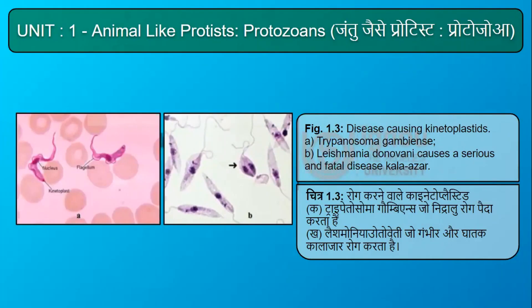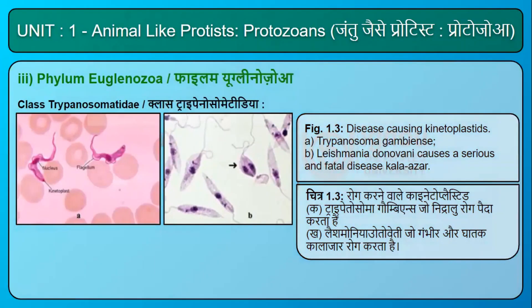Looking at these two figures: these are Trypanosoma gambiens and Leishmania donovani, which causes the serious and fatal disease kala-azar. These are disease-causing kinetoplastids.